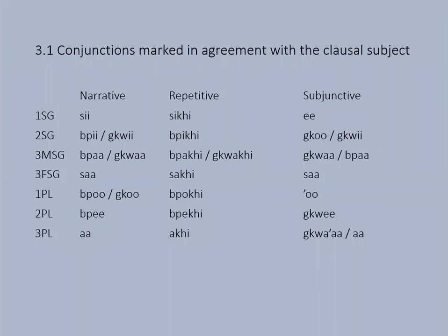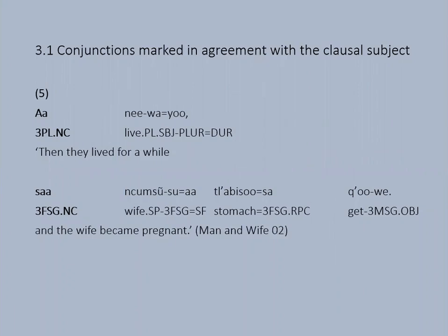The first type is conjunctions marked in agreement with the causal subject. Sandawe clauses can be combined by freestanding conjunctions that agree with the subject of the clause. There are three sets: narrative (NC), repetitive (RC), and subjunctive (SC). Example five illustrates two narrative conjunctions. In the first clause, the third person plural narrative conjunction 'a' is sentence-initial and the only means of identifying the subject. In the second clause, the third person feminine singular narrative conjunction 'sa' signals a switch in subject and links the clause to the previous one — functioning as 'and then she.'